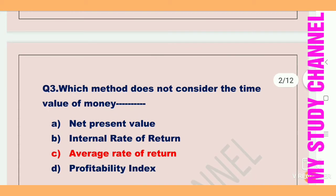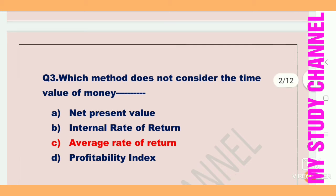Next question: which method does not consider the time value of money? Option A is net present value, B is internal rate of return, C is average rate of return, and D is profitability index. Option C is the right answer — that is average rate of return — which does not consider the time value of money.